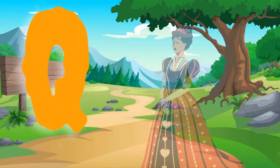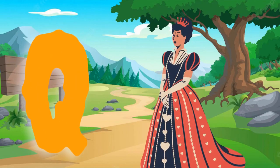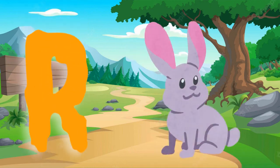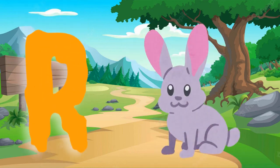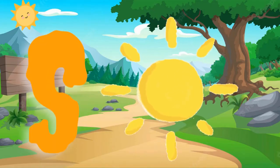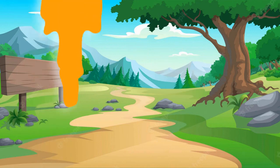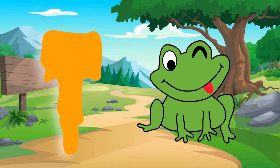Q is for queen, q-q-queen. R is for rabbit, r-r-rabbit. S is for sun, s-s-sun. T is for toad, t-t-toad.